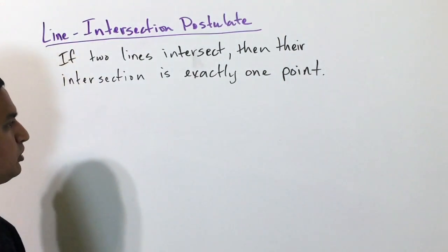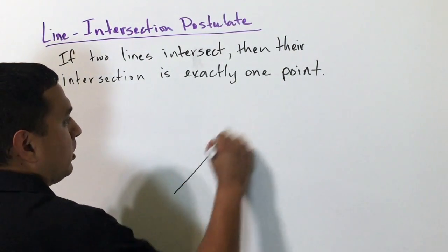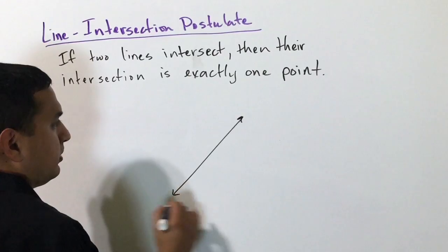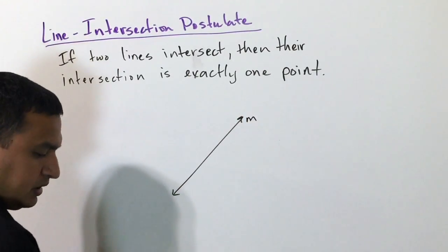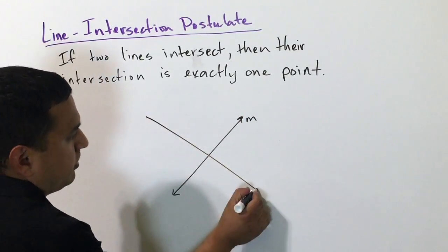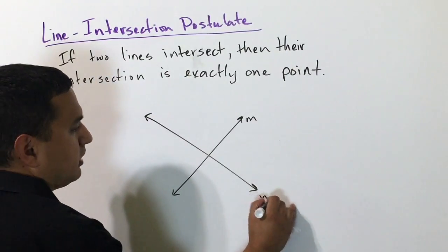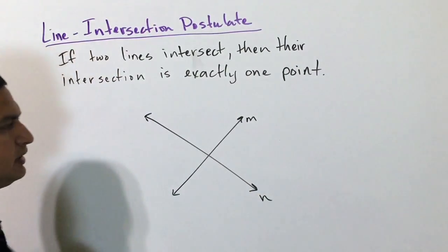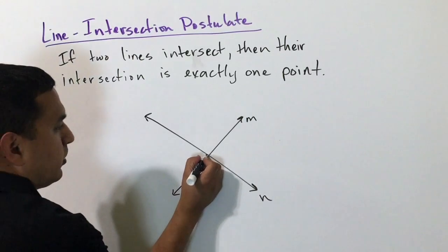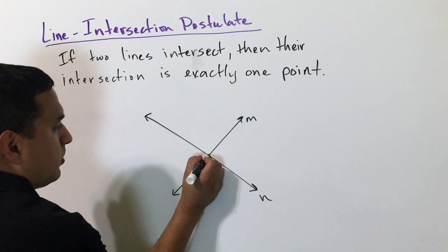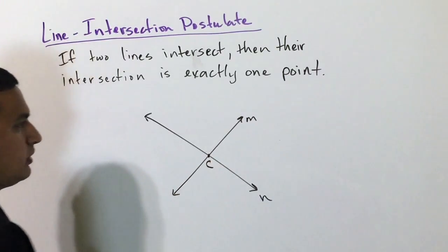This simply means that any time two lines cross, if I have a line here — we'll call this one M — and a line going this direction, we'll call that N, then if they cross, there is going to be just one point. We'll call this point C.